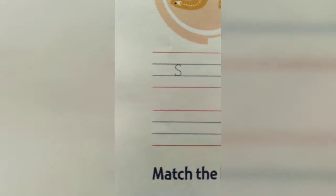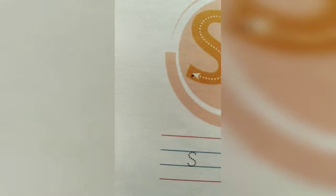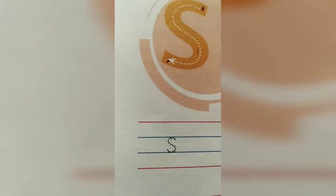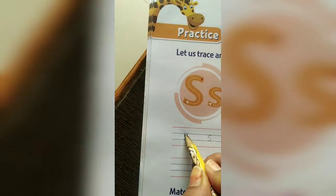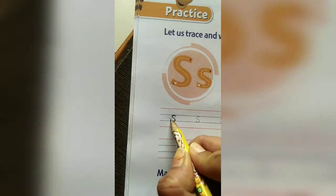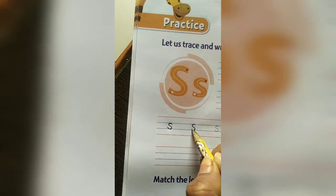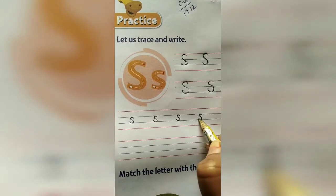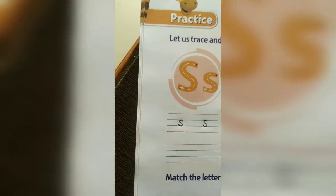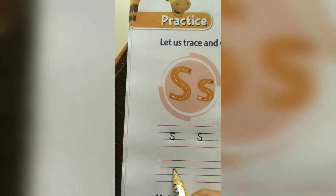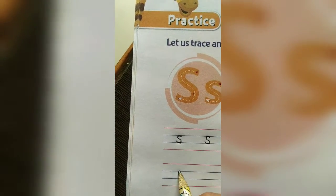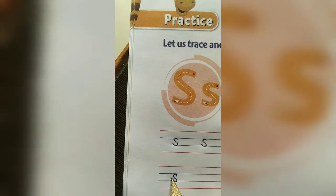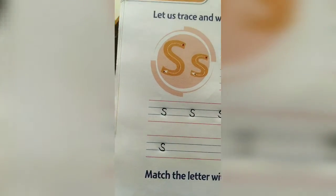Now we will learn to write small s. For writing small s we have to write in the second and third line — the middle two blue lines. So first we will learn to trace over the dots. Small s. Now we will learn to write without dots, first in two blue lines. We will make a small turn, turn and turn. We have to write very small.